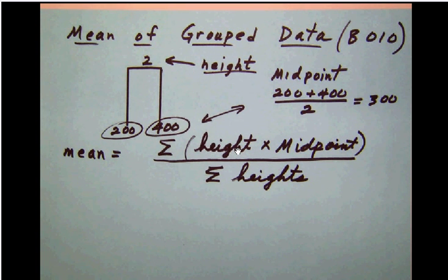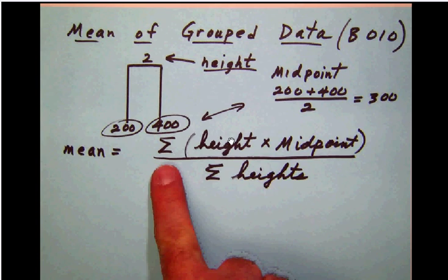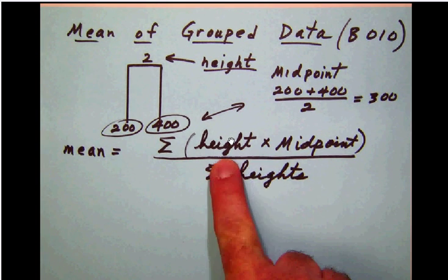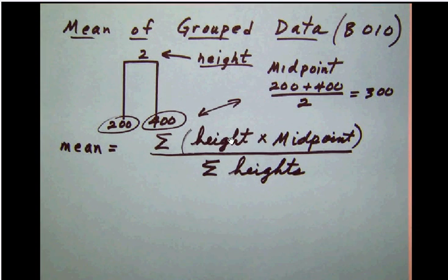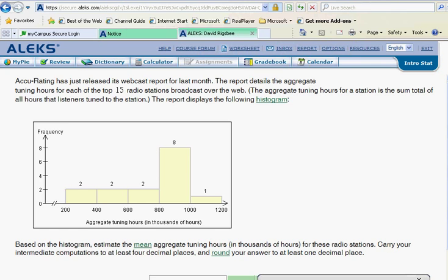Now once again, remember to calculate, we're going to have to add up a number of those products, each height times each midpoint. So let's get back and start setting those up. Now looking at our histogram here, once again, 300 is our first midpoint. It's pretty obvious here that this midpoint would be 500, this one's 700, 900, and lastly 1100.